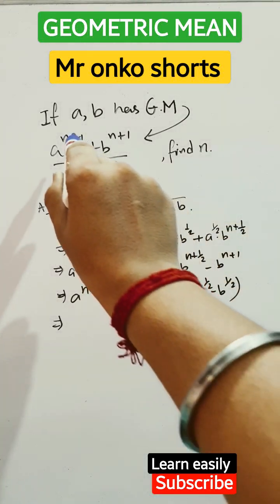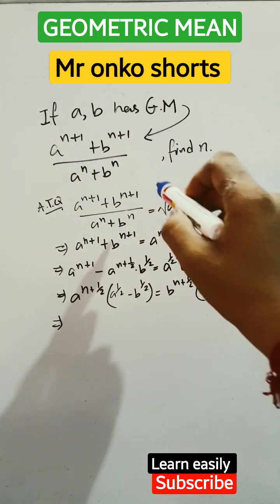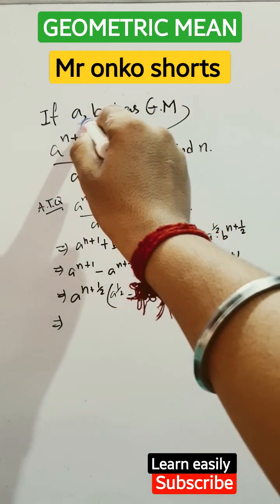Guys, welcome to Mr. Onko Shorts. Today we are given that a and b have geometric mean, find the value of n. So a and b have GM, it means a and b are in geometric progression. So if they are in GP...